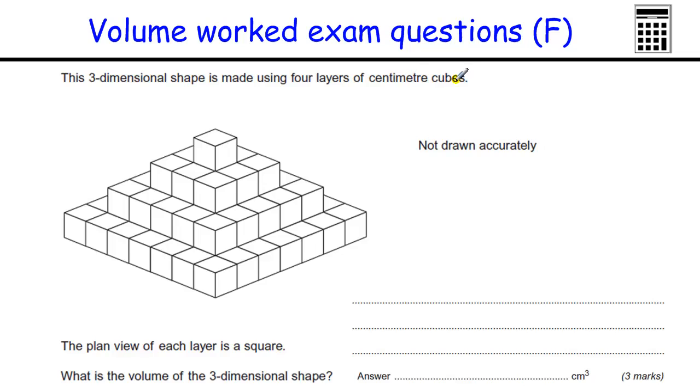To start off with here we've got a three dimensional shape made of squares, four layers. It shows you what is the volume of the shape. So the volume is all about how many cubes there are.